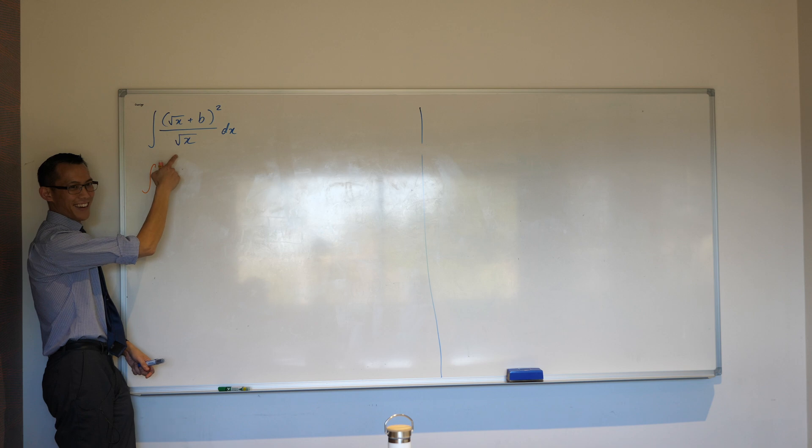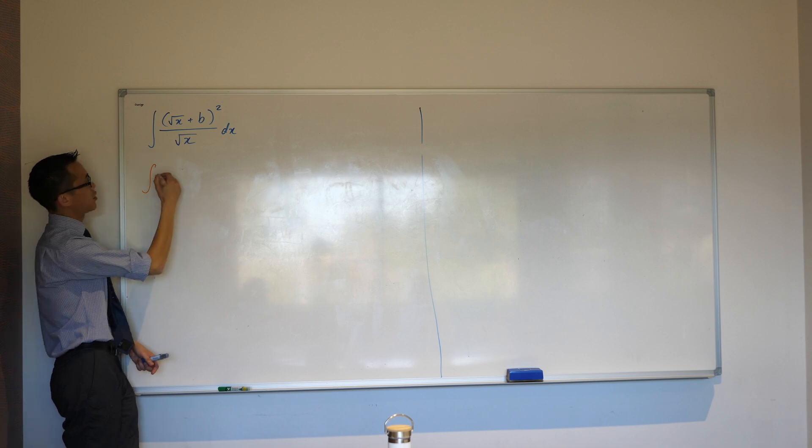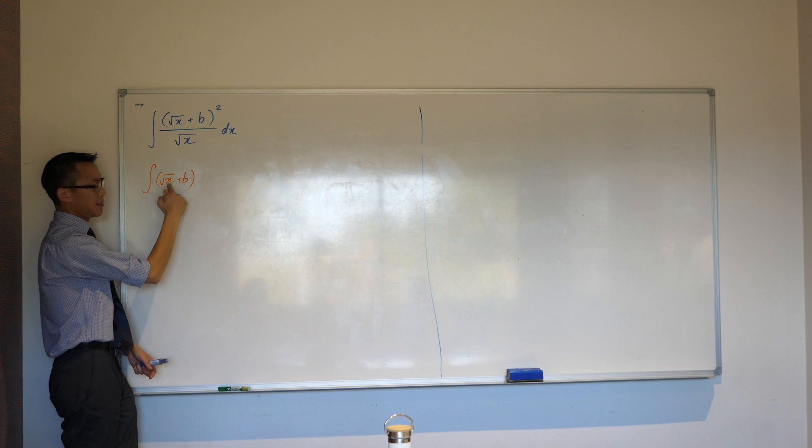It was something with this denominator, right? Yeah, bring it up. Yeah, okay, so you had this, we call it a, this is a binomial, right?